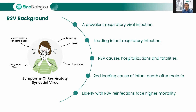Respiratory Syncytial Virus is a respiratory pathogen that affects individuals of all ages. It typically causes mild cold symptoms. However, in vulnerable populations like infants, the elderly, and immunocompromised individuals, it can lead to more severe conditions such as bronchiolitis or pneumonia. According to the CDC, each year in the USA alone, RSV causes more than 58,000 hospitalizations of children under age five and 177,000 hospitalizations of older adults aged 65 or more. In older adults, more than 13,000 cases are estimated to be fatal.